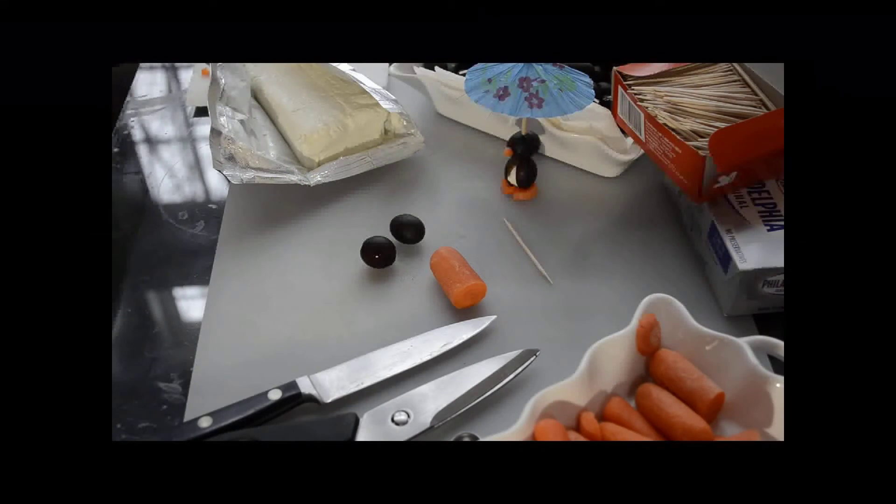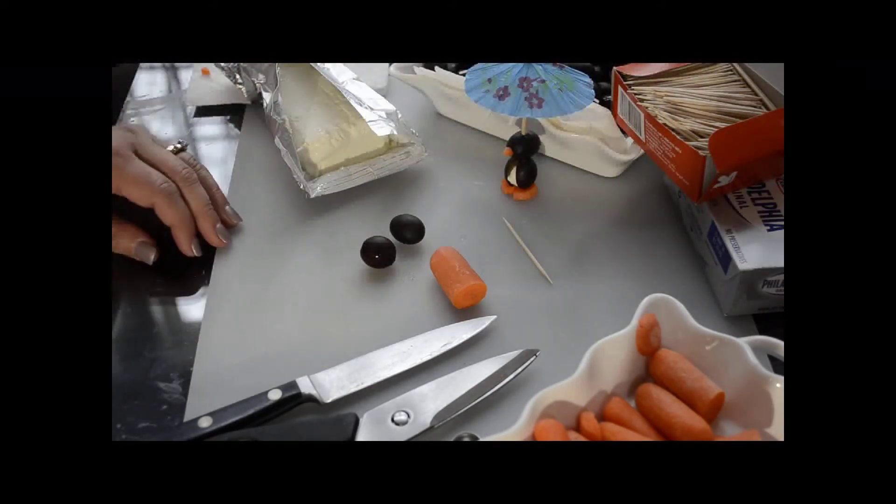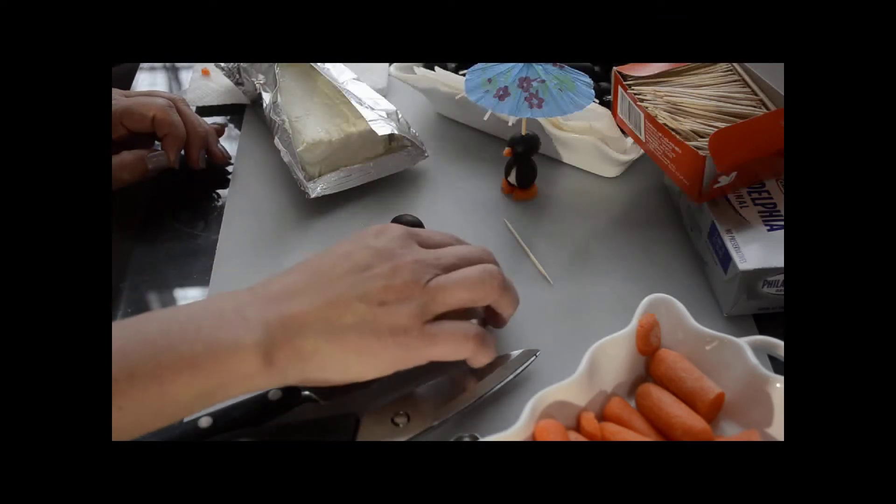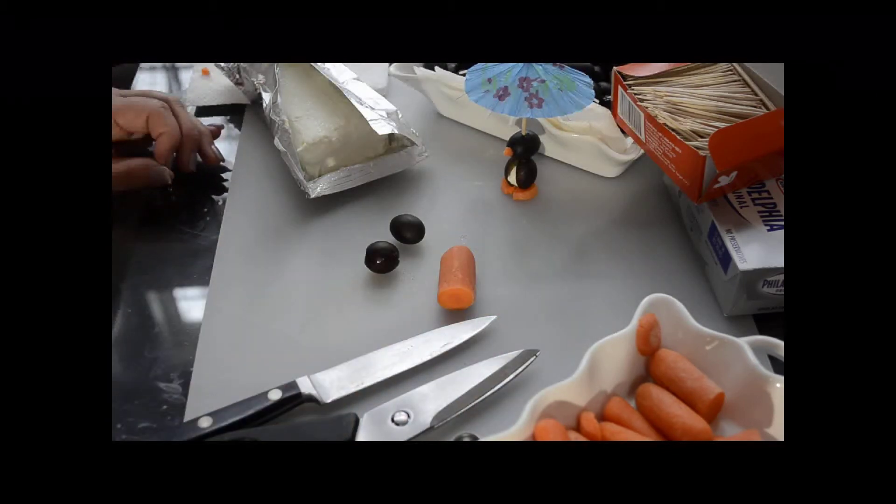Today I'm going to show you how to make a penguin olive. The ingredients you need are Philadelphia cream cheese, medium black olives, baby carrots, and you will need a toothpick to secure your penguin.